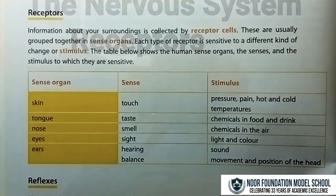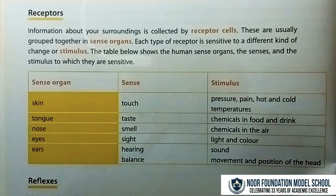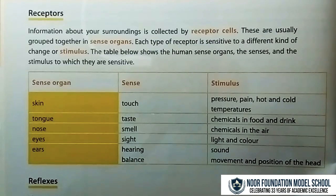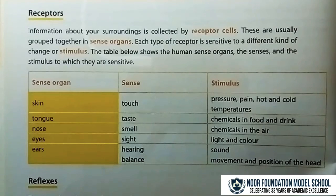Information about your surroundings is collected by receptor cells, which are usually grouped together in sense organs. Each type of receptor is sensitive to a different kind of change or stimulus. The table below shows the human sense organs, the senses, and the stimulus to which they are sensitive.